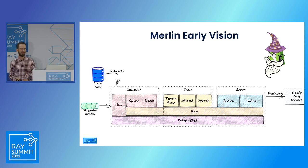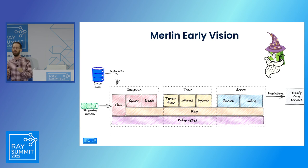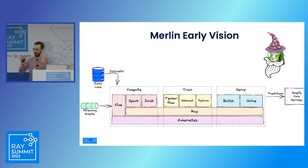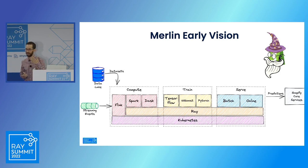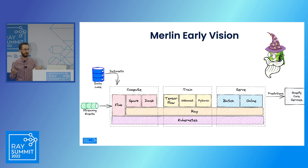This is a diagram of a very early version of Merlin. Two things about this: we clearly did not have graphic designers at the time, and we did not have a clear vision of how the ML platform would look after the prototype. We understood the machine learning workflow — starting from input from our data lake or streaming events, through computation, preprocessing, training, evaluation, and then serving the model for either batch use cases or online inference. We knew that on the infrastructure level we would run on top of Kubernetes, and on the application layer we would leverage Ray for distributed computation.